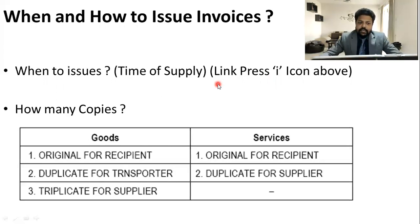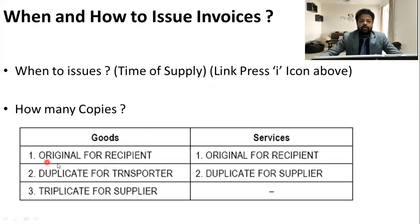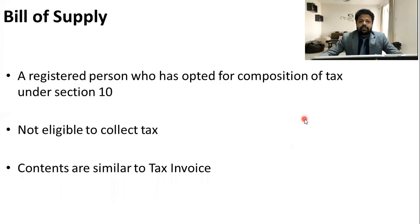In the case of goods, three copies of the invoice are issued: the original for the recipient or buyer, the duplicate for the transporter carrying the goods, and the triplicate retained by the supplier who is issuing it. In the case of services, there is no issue of transportation, so only two copies are required: the original for the recipient or buyer, and the duplicate for the supplier who is providing the services.